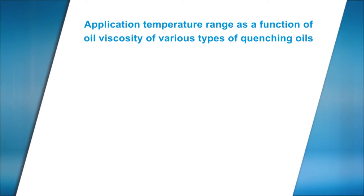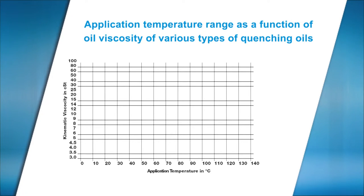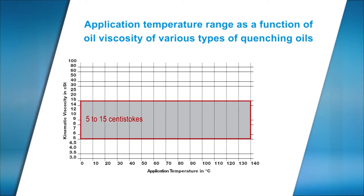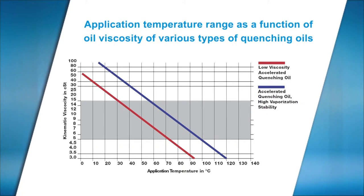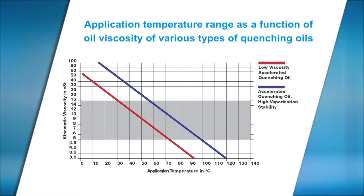Let's refer to the graph of viscosity versus application temperature of the quenching oils. Quenching oil temperature should ensure optimal viscosity, which is generally in the range of 5 to 15 centi-stokes. The red line indicates low-viscosity accelerated quenching oil. The blue line indicates a medium-fast-speed quenching oil having high vaporization stability. And the yellow line indicates hot quenching oils.